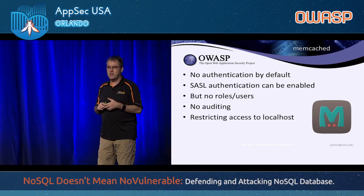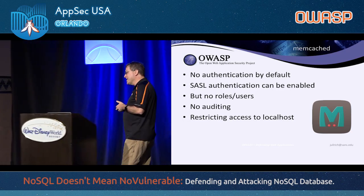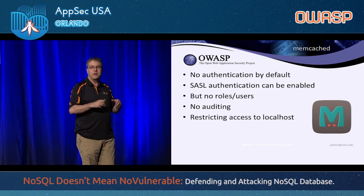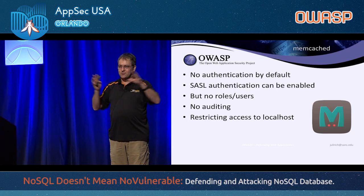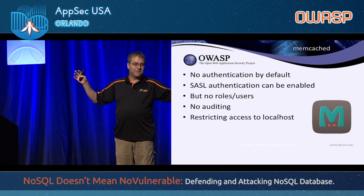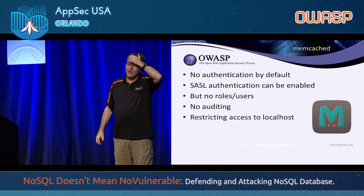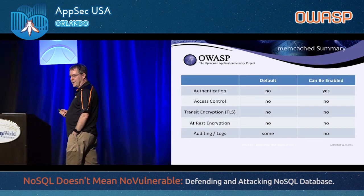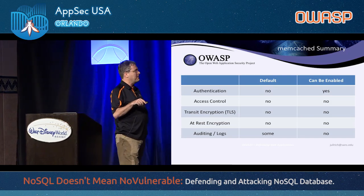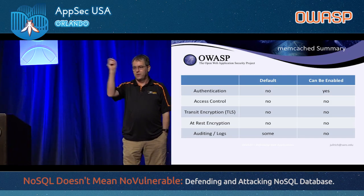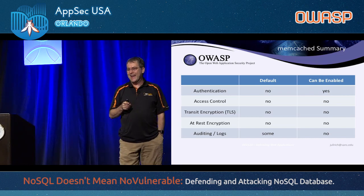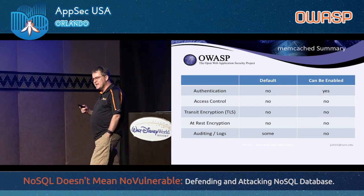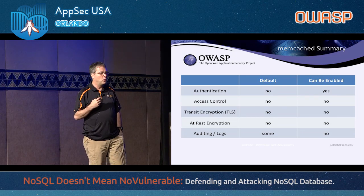There's a very close cousin to memcached called Redis. Redis actually states in their security notes that this database is designed to be run in a trusted environment between trusted clients and trusted servers. Anybody who trusts their entire network probably hasn't looked closely enough at whether to trust it or not. The only security in memcached is simple password-based authentication with no roles — just one user to authenticate — and once there is access to the database, it's almost game over.